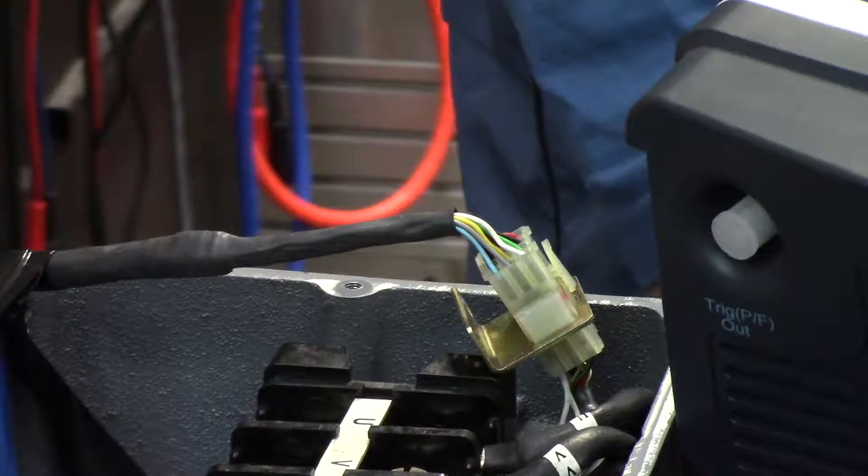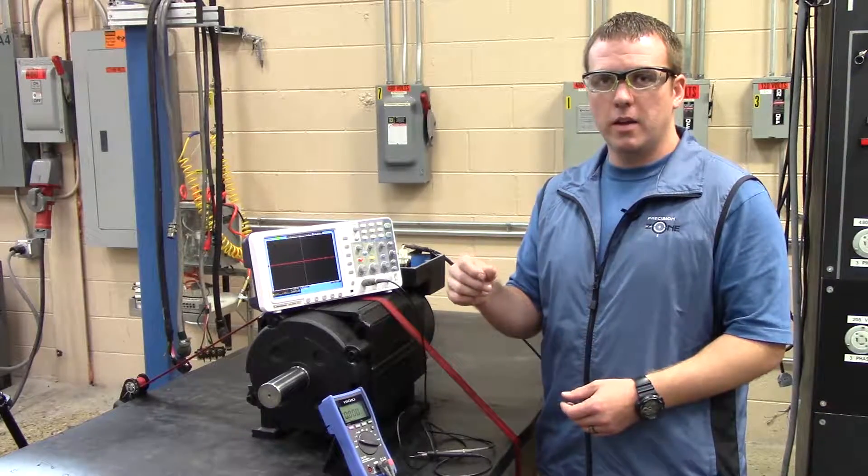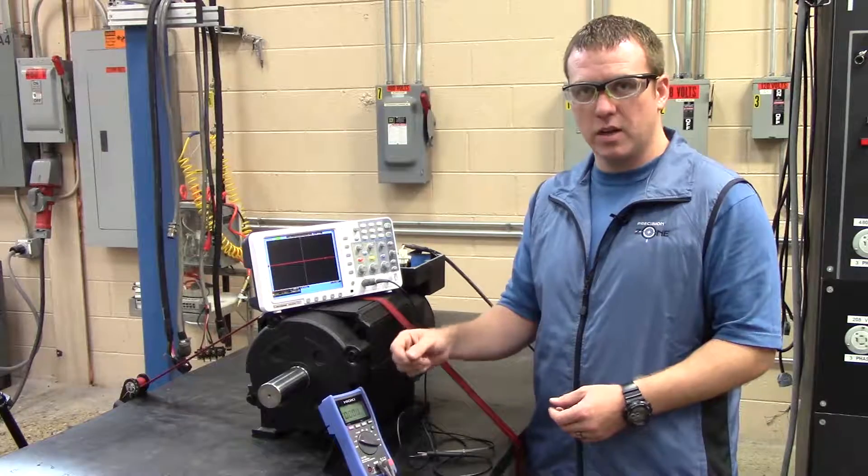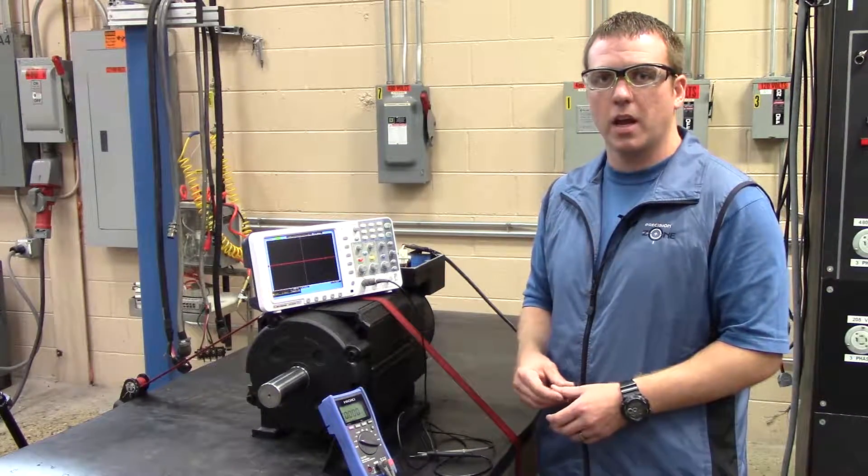Pin 4 right next to that is going to be your A-not. Then when you move down to pin 5 and 6, that's going to be your B, B-not. And then 7, 8 will be your Z and Z-not signals.